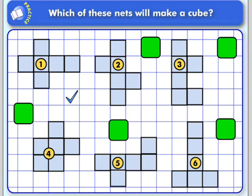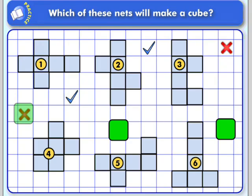How about number two? Would that fold back up into a cube? And the answer is yes. Number three actually is not a net of a cube — it would not fold back up into a cube. Four is pretty obvious; that would not be a net of a cube. And five and six actually both would be nets of a cube.